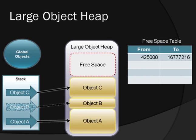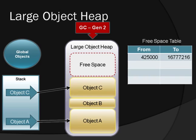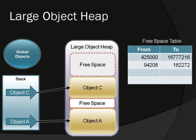Here, object B loses its root reference. The next time the garbage collector runs, all it does is record the fact that this section of memory is free in the free space table and decommits the memory.